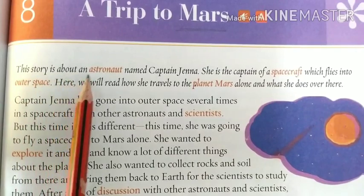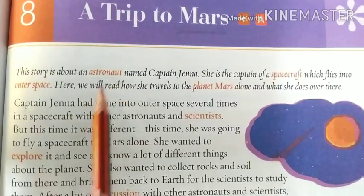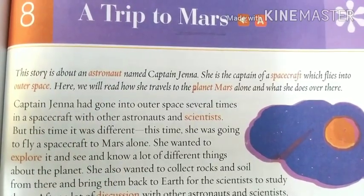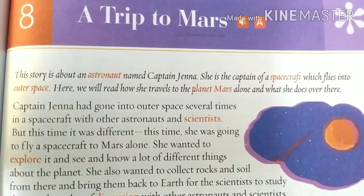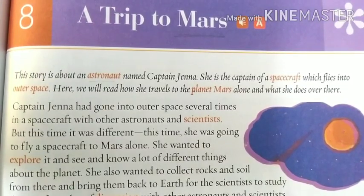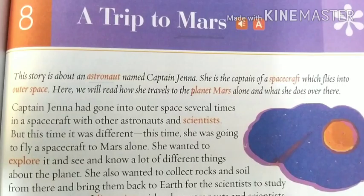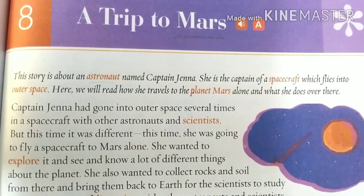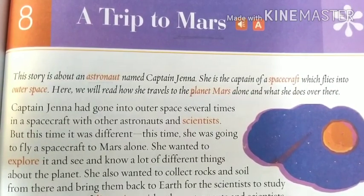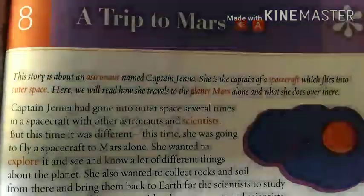This story is about an astronaut named Captain Jenna. An astronaut is a person who is trained to travel in outer space in a spacecraft. A spacecraft is a kind of vehicle — a very special and powerful vehicle that carries people into outer space. Outer space is the space that is beyond the Earth.